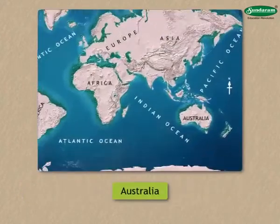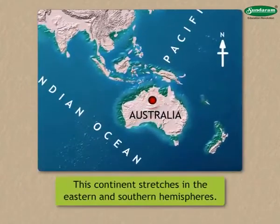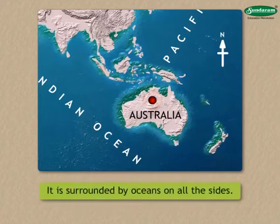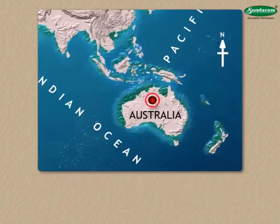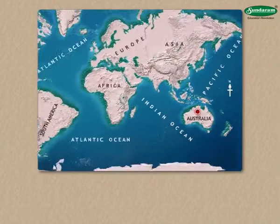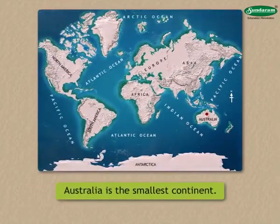The continent of Australia stretches in the eastern and southern hemispheres. It is surrounded by oceans on all sides. Find the names of these water bodies on the map. Of the seven continents, Australia is the smallest.